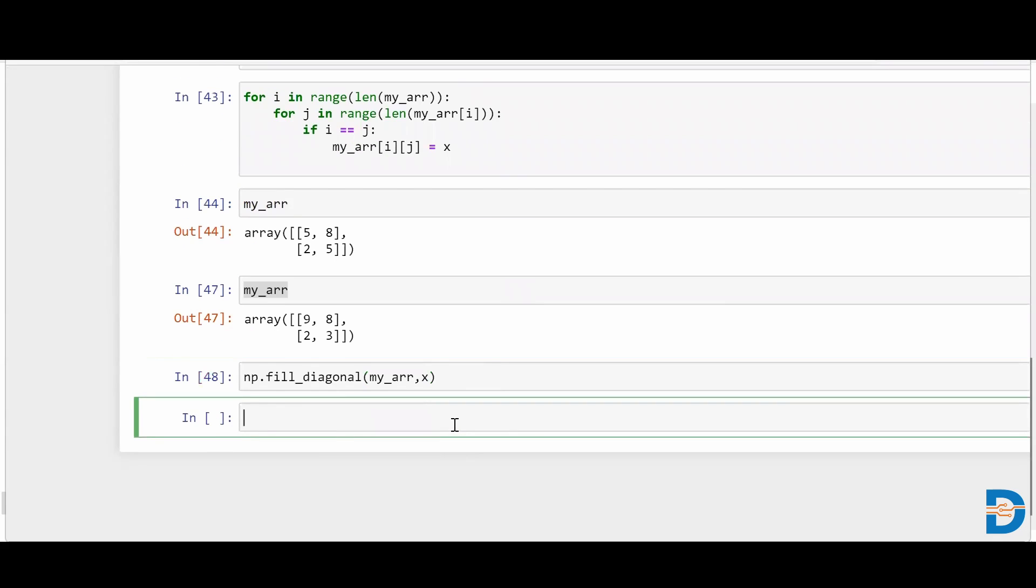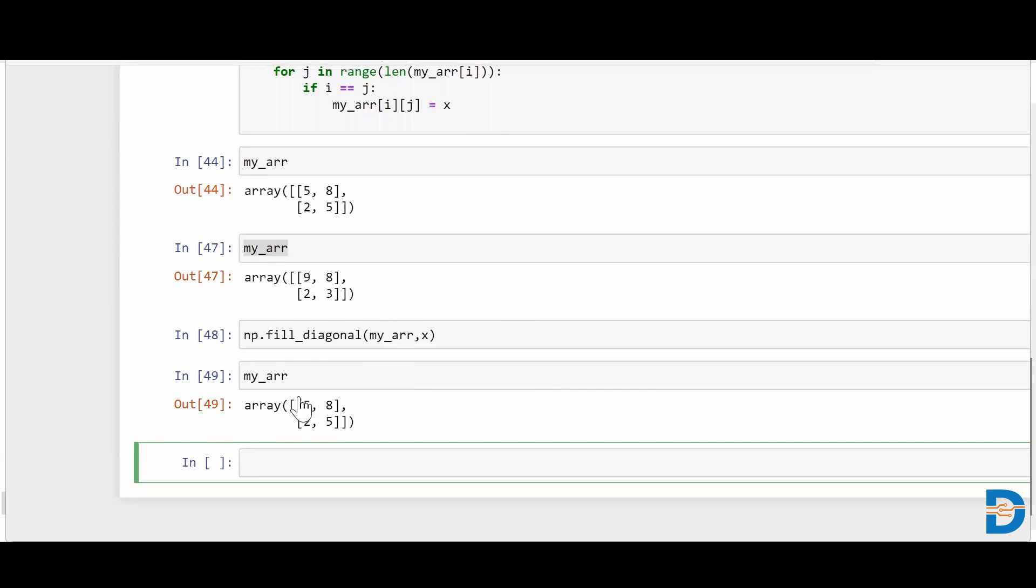Simply when I run this, it will go and reflect it back to my original NumPy array. So now if I run my_arr again, I'll see that both the diagonals have been converted to five.